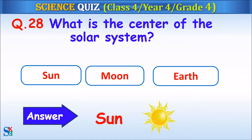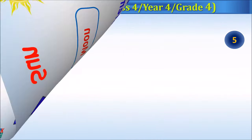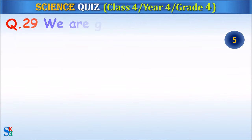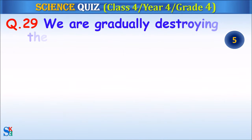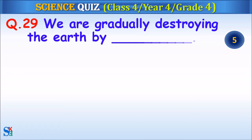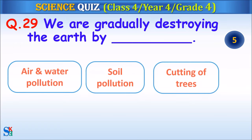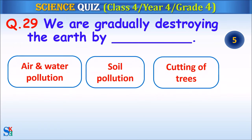Question 29: We are gradually destroying the earth by — air and water pollution, soil pollution or the cutting of trees? Your time starts.